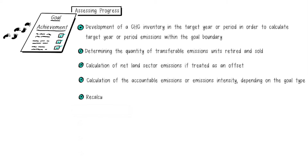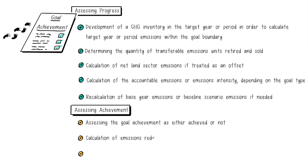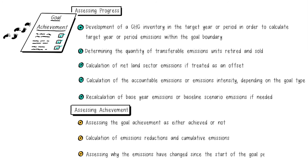And, recalculation of base year emissions or baseline scenario emissions, if needed. These additional steps for assessing achievement are addressed in the following sections: assessing the goal achievement as either achieved or not; calculation of emissions reductions and cumulative emissions; and assessing why the emissions have changed since the start of the goal period.